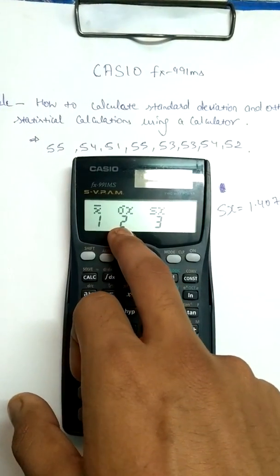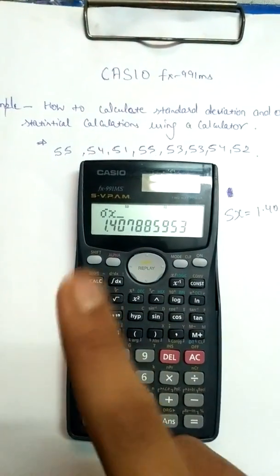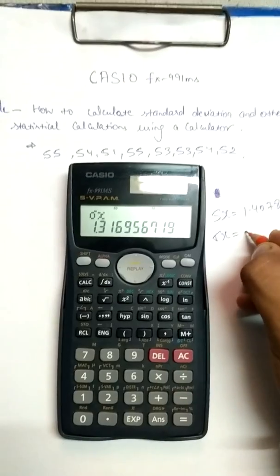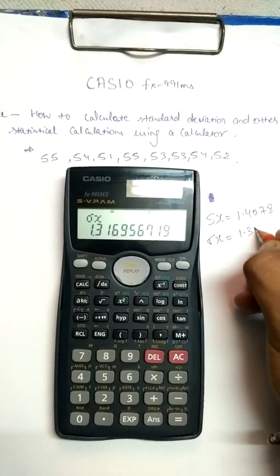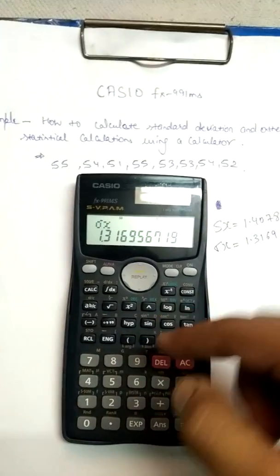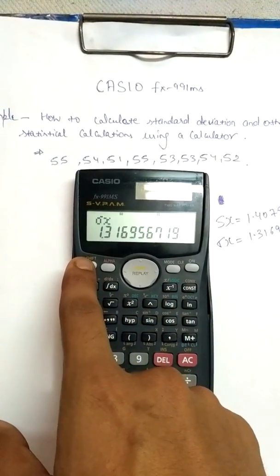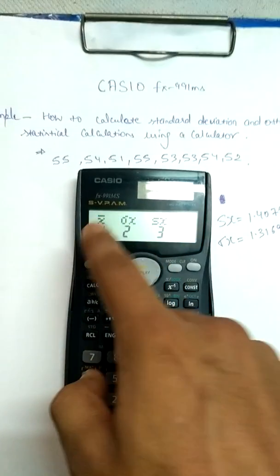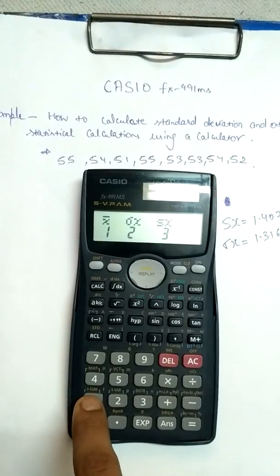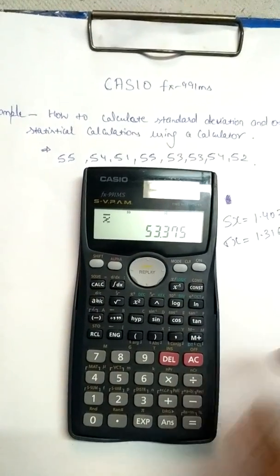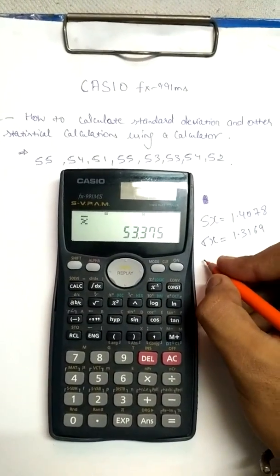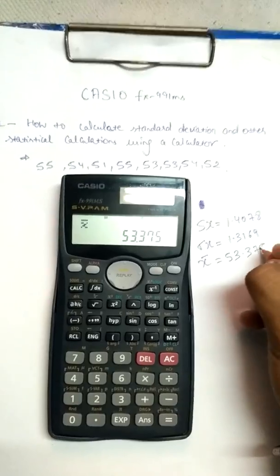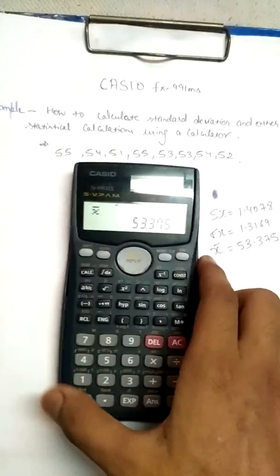Now I want to find the mean. I'll press SHIFT then 2 again and press 1 for mean. Then I press equals, and the mean comes out as 53.375. So now I have all three values: population standard deviation 1.4078, standard deviation 1.3169, and mean 53.375.